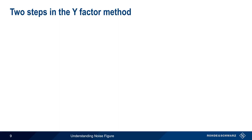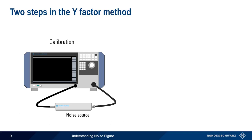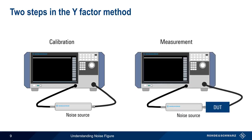In practice, the Y-factor method usually involves two measurements. Before making measurements of the DUT, an initial calibration step is usually performed. This calibration step, which is made with the noise source attached to the spectrum analyzer input, is used to measure the noise figure of the analyzer itself. This allows the analyzer's noise figure to be mathematically removed from the DUT measurement result, enabling a more accurate measurement of the noise figure of the DUT. You may hear calibration referred to as second-stage correction because the analyzer represents the second stage in a series of devices, each with its own noise figure.